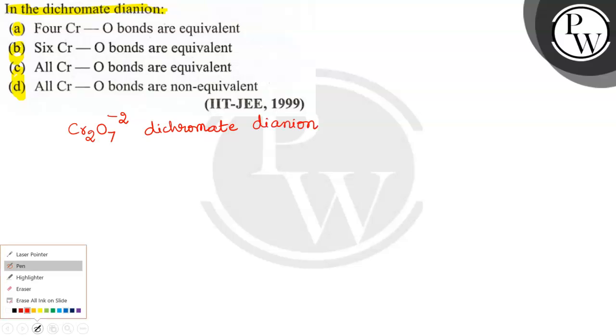Here, if you observe the structure, each unit of CrO₄ is tetrahedral.